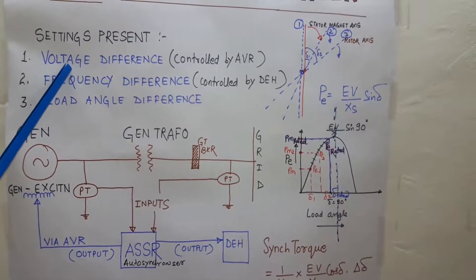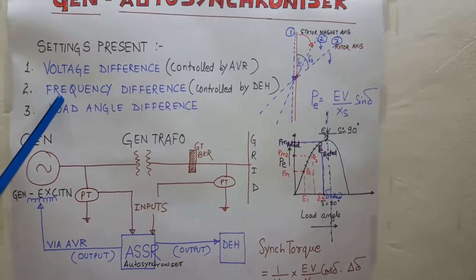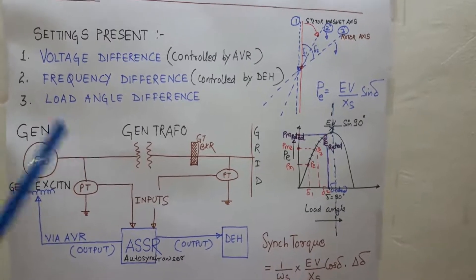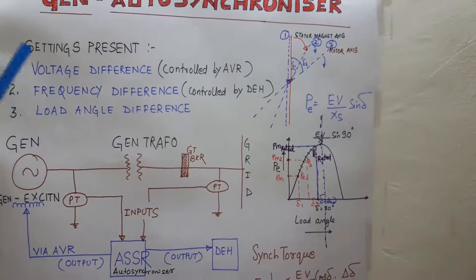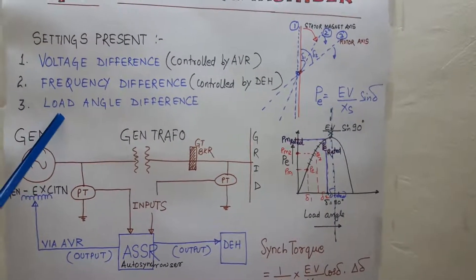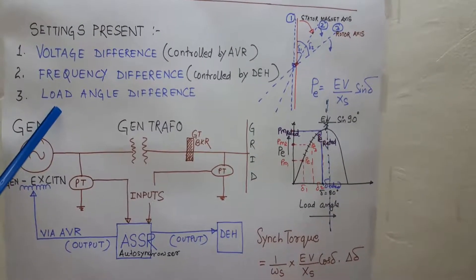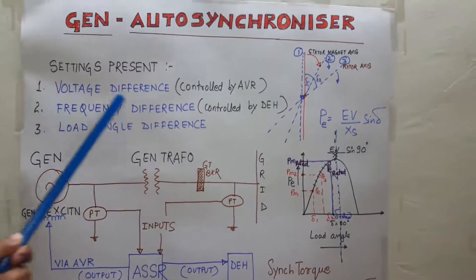One, the magnitude of the voltage. Second, the frequency of the voltage. Third, the phase angle of the voltage. So it has three settings: allowable voltage difference setting, allowable frequency difference setting, and allowable load angle difference setting.